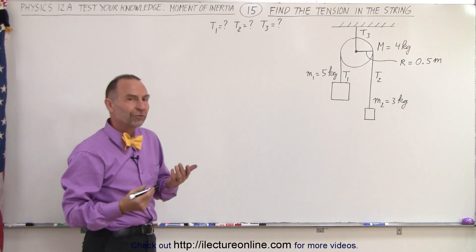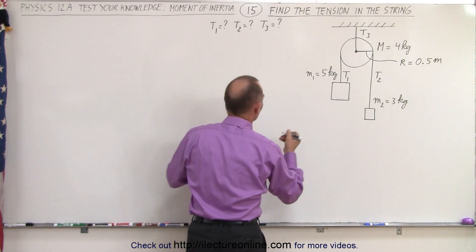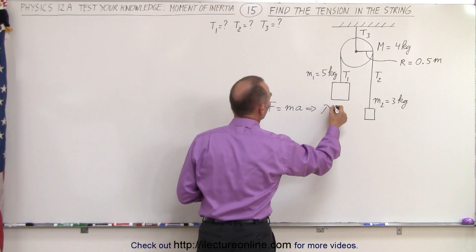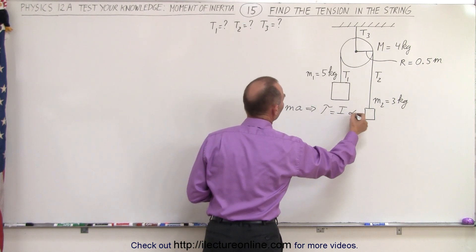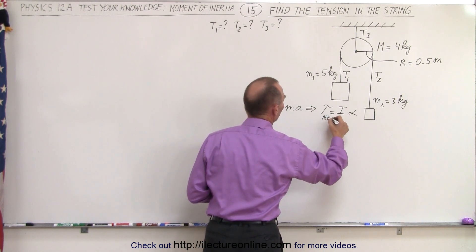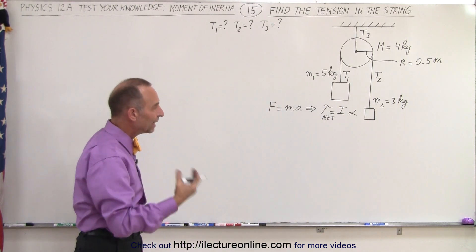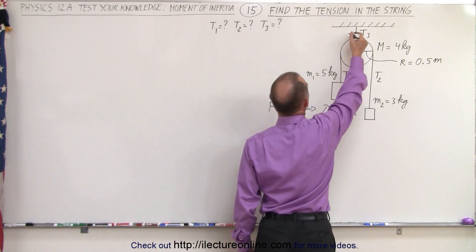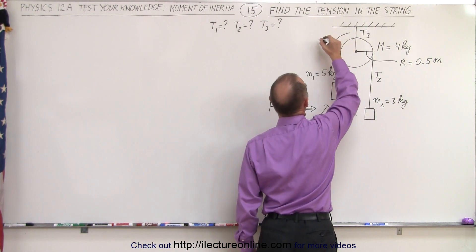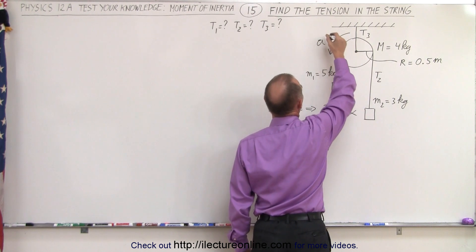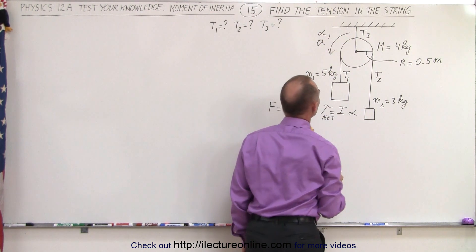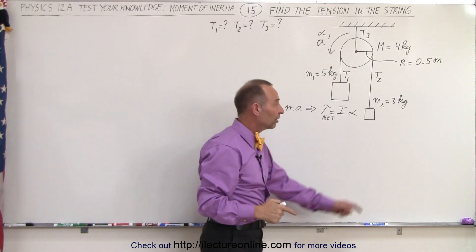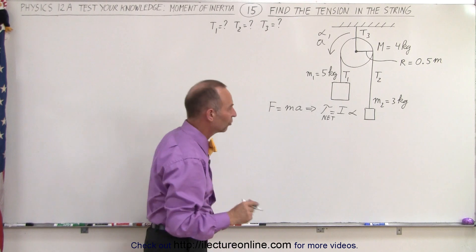To do that, we're going to find the rotational equivalent of F = ma. In other words, F = ma for linear motion becomes torque equals I times alpha. We're looking for the net torque, which means all the torques aiding the acceleration minus all the torques opposing the acceleration. Notice that the acceleration is probably going to go in this direction, meaning the heavy weight aids the acceleration and the small weight opposes it.